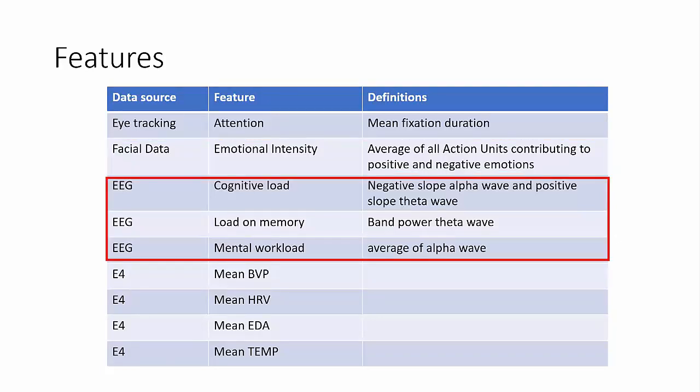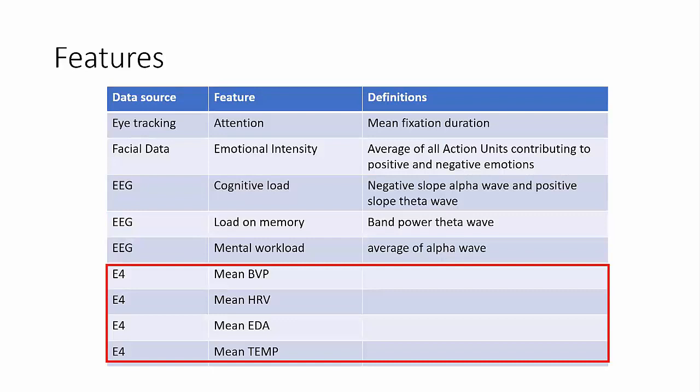Then from EEG, we divided them into further bands based on the frequency using a fast Fourier transform. And we computed the cognitive load, load on memory and mental workload. All the measurements are computed using previously known formulas and the citations are given in the paper. And finally, we simply computed the mean values of the four data streams coming from Empatica wristband for each question for each participant.